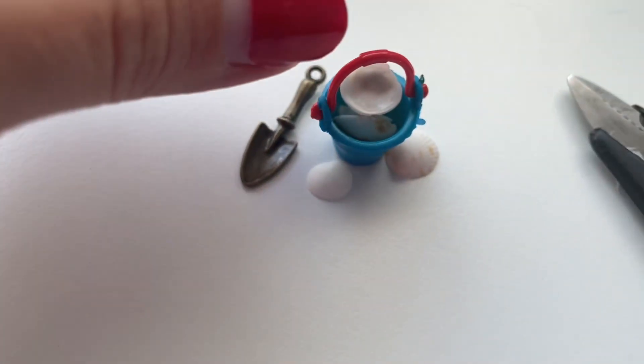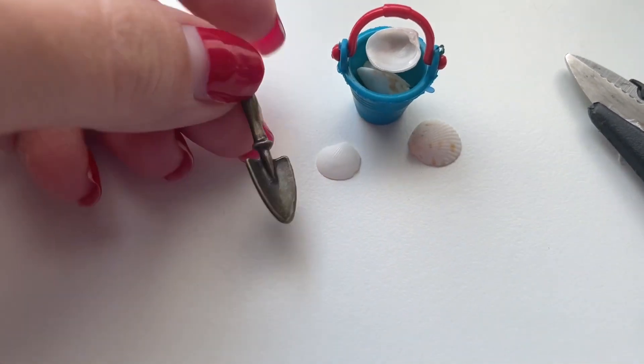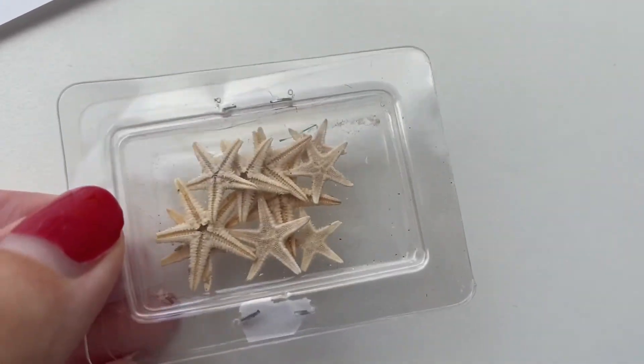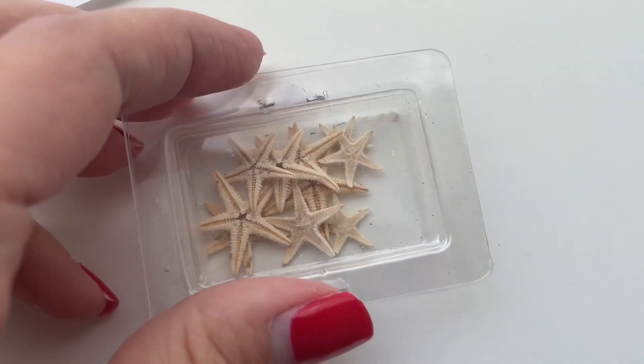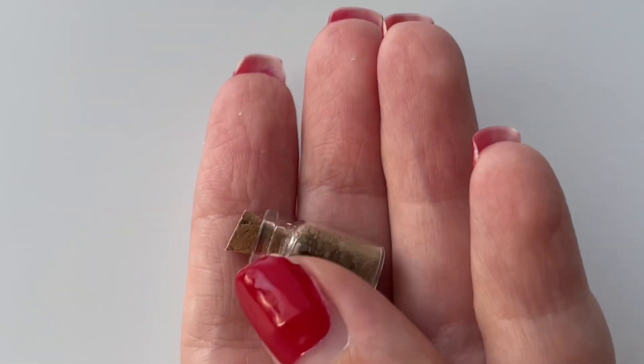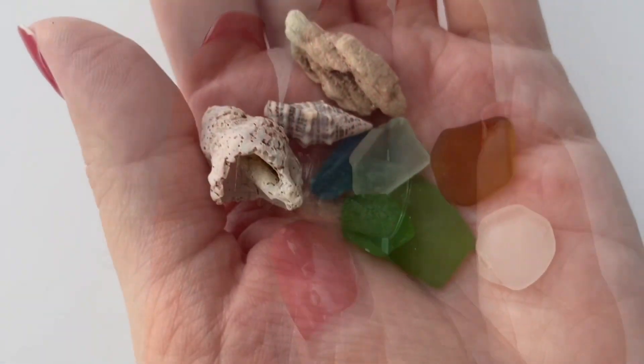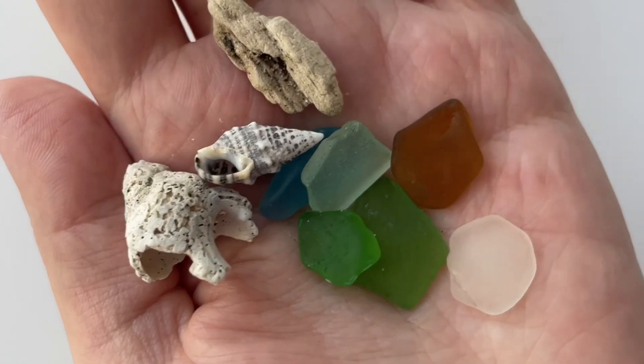These are some shells that I actually found at the beach many years ago and they're small enough to fit inside of the bucket. I also have these really tiny dried starfish that are going to make really great decorations inside the cabinet. I also just filled a miniature glass jar with some sand and when I was at the beach I collected some different shells, sea glass, and some wood.